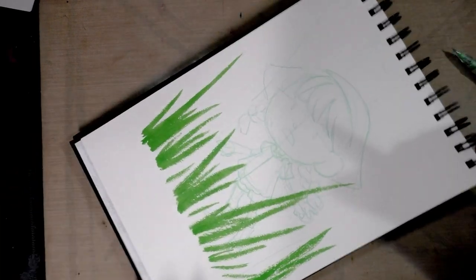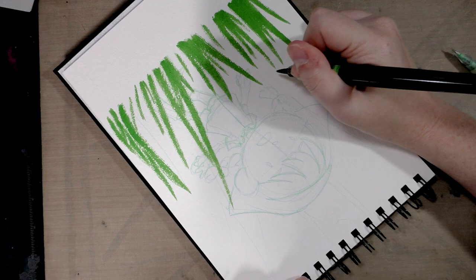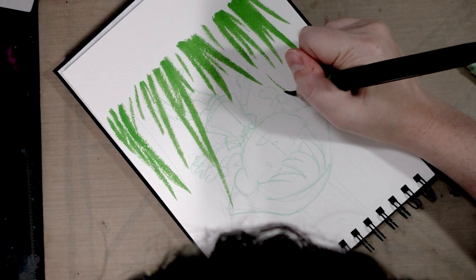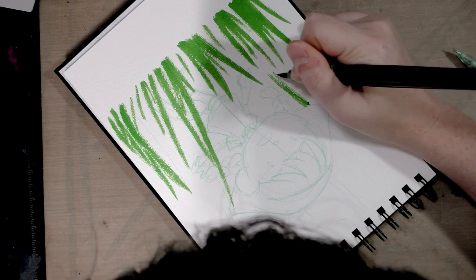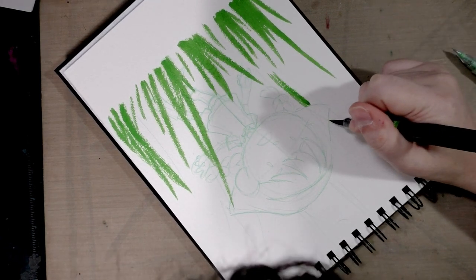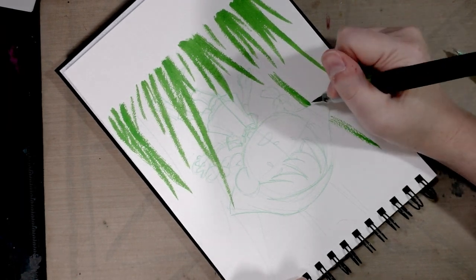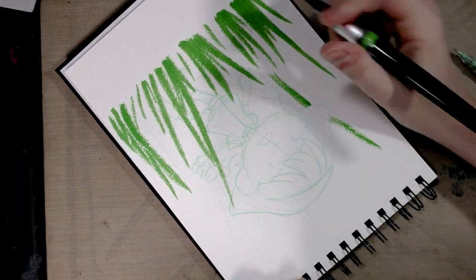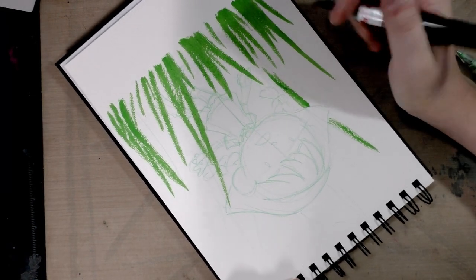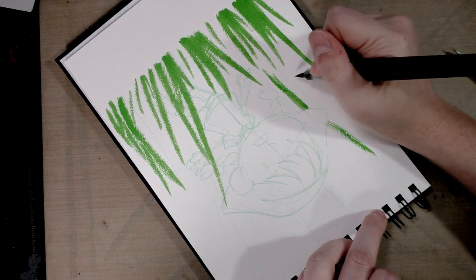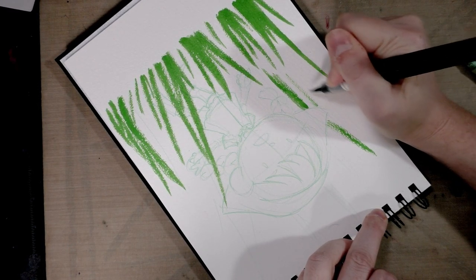Alright, we have our first layer down. Now we're going to work on the background using a very similar technique. I actually find it a little harder to work on the background and the foreground because you have to stop and start so much when you hit objects. And for a piece like this, doing the background first is going to be helpful because it's going to tell me how much green I want to use in the foreground in order to maintain an attractive balance.